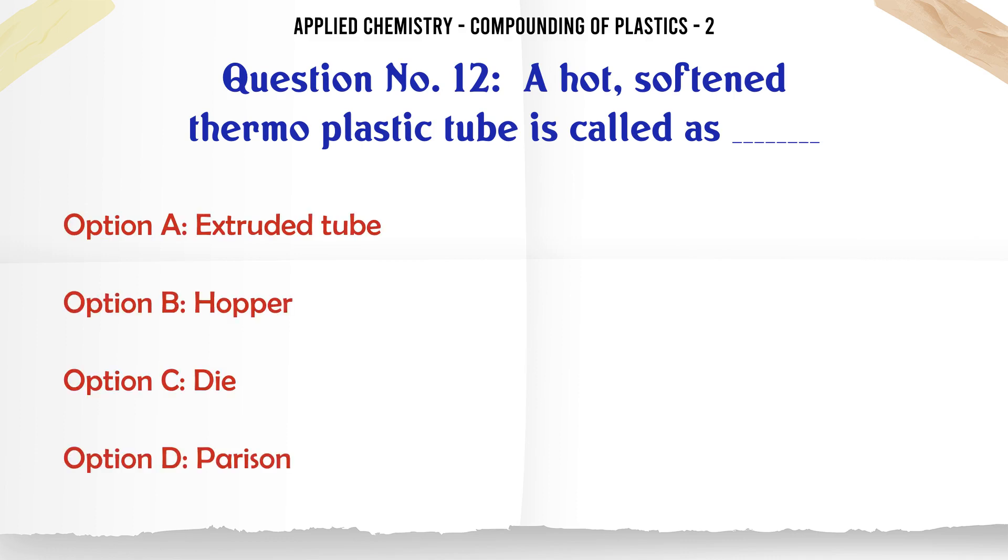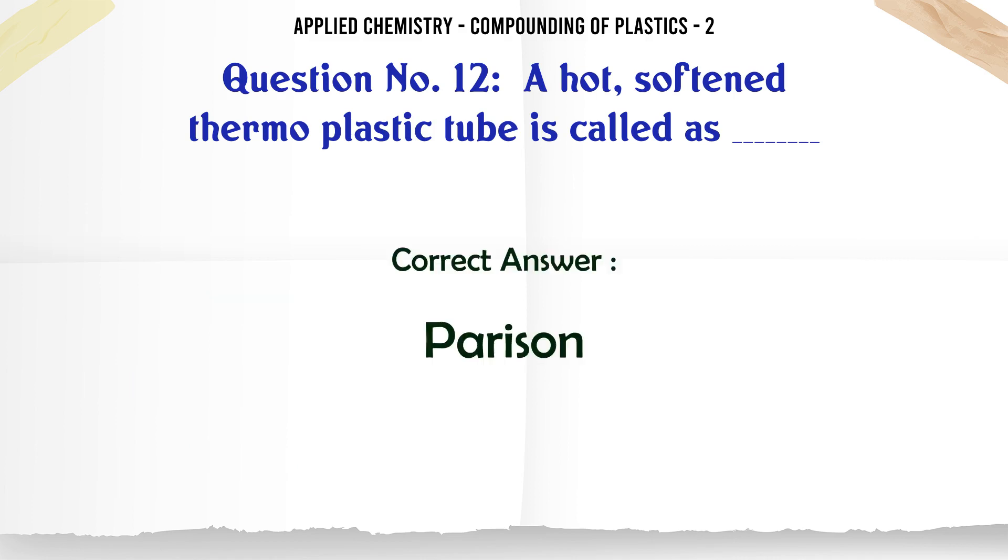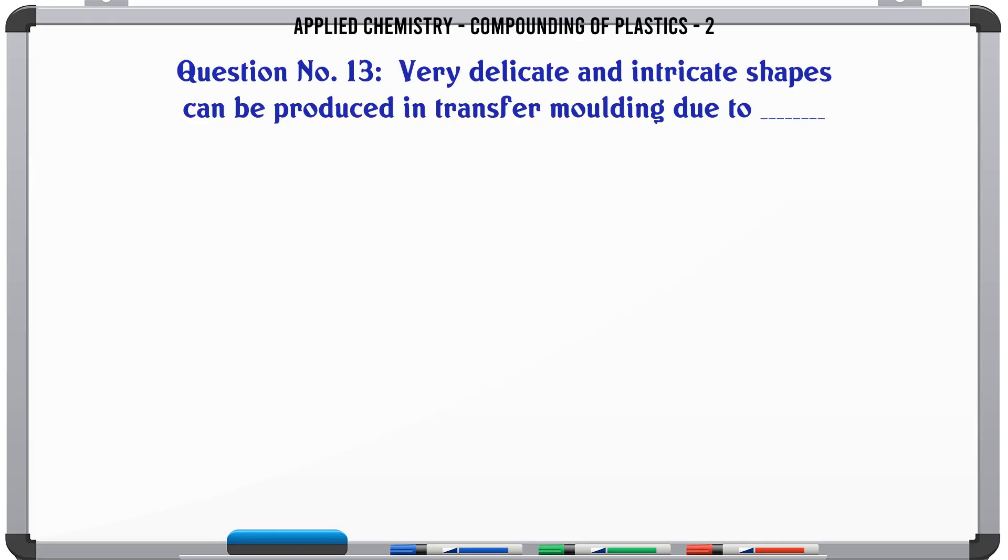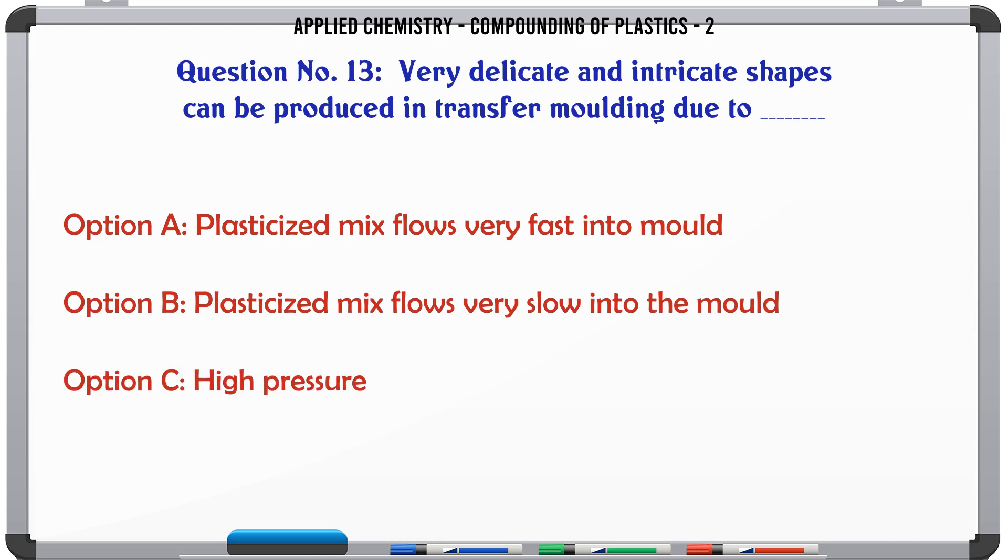A hot softened thermon plastic tube is called as A. Extruded tube, B. Hopper, C. Dye, D. Parison. The correct answer is Parison.